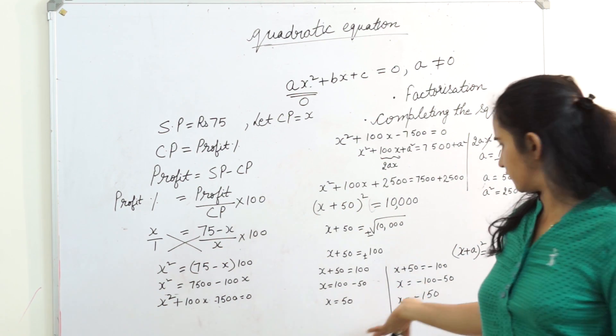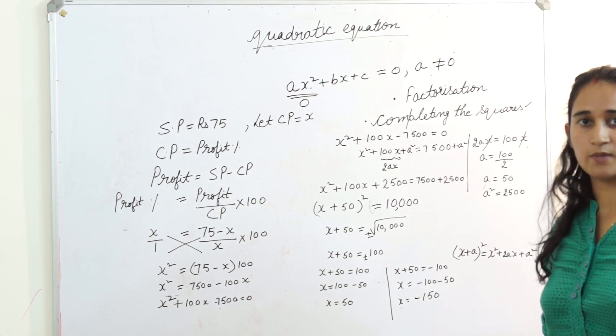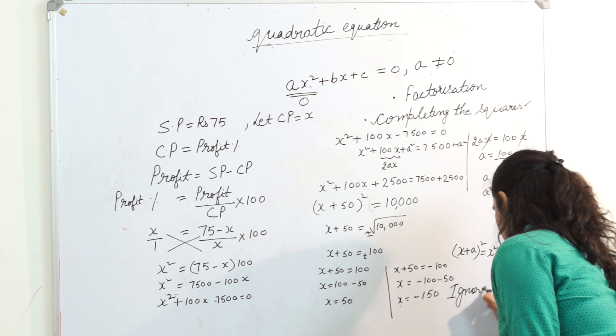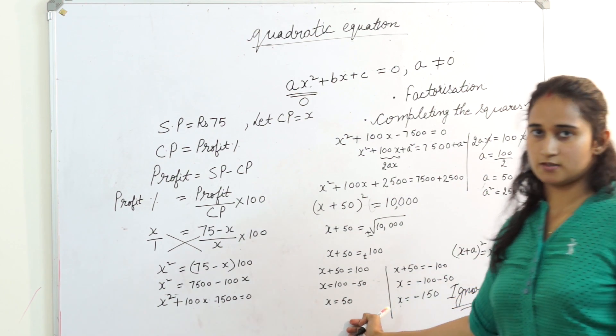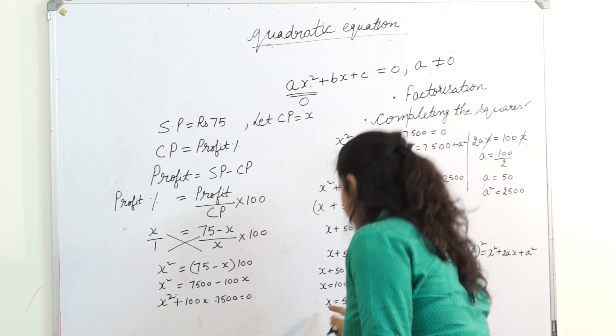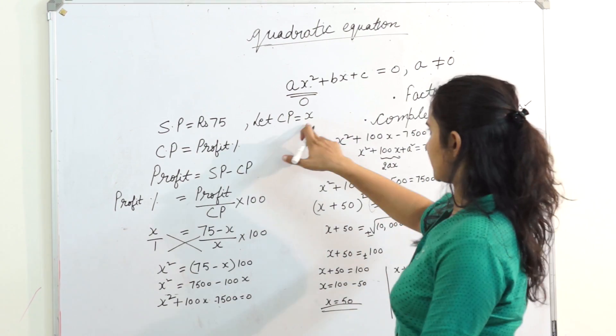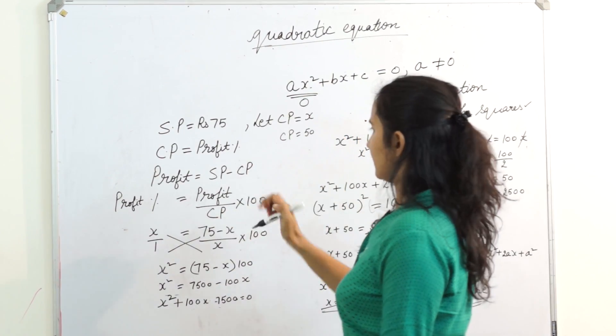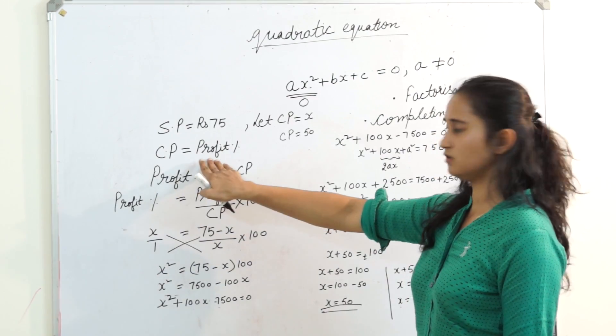So we are sensible enough. Money cannot be negative. You can't get cost prices minus 150. So ignore this one. What is my cost price? My cost price is 50 rupees. So my x is 50. It means my cost price is 50 and my profit percent is also 50.